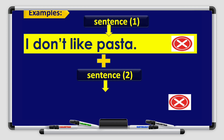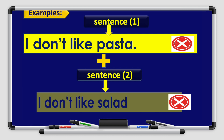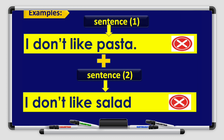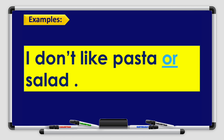Let's see a few examples. Sentence 1 in negative: I don't like pasta. Sentence 2 in negative: I don't like salad. I would like to join them together using a conjunction — the conjunction 'or'. Result: I don't like pasta or salad.